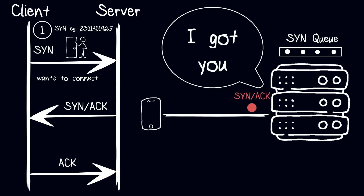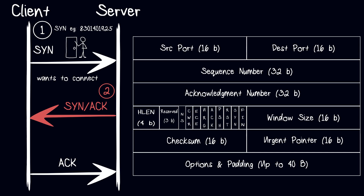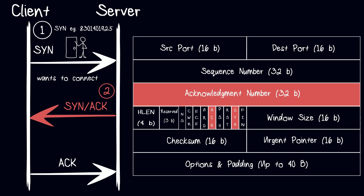After that, the server will respond with a SYN-ACK packet. The SYN-ACK packet has both the SYN and ACK flags set to 1. The ACK number of the SYN-ACK packet acknowledges the sequence number sent by the client. It is equal to that sequence number plus 1, and it indicates that the server received the connection request.